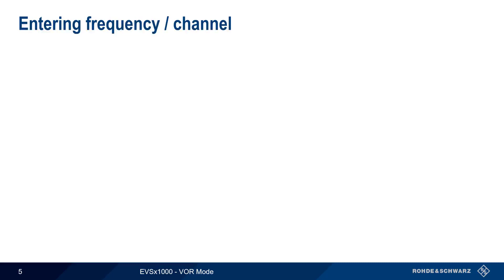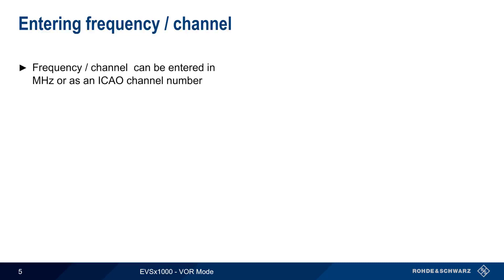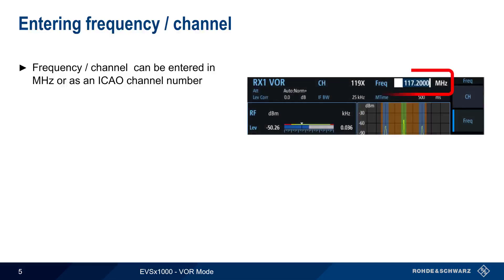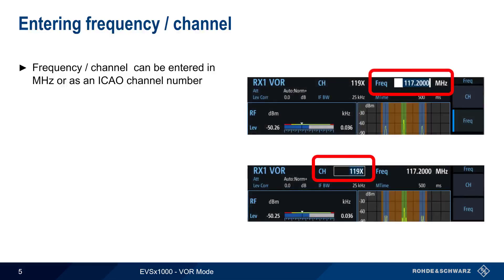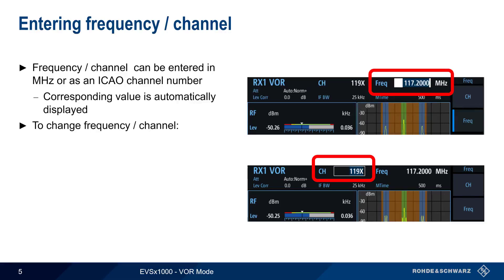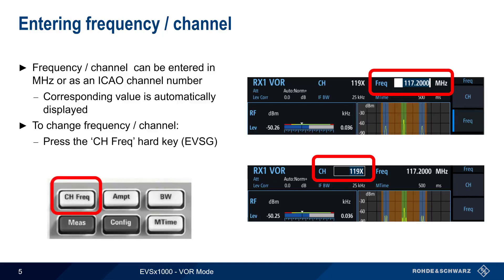The first step in VOR analysis is entering the frequency or channel of the VOR station. This can be done either as the absolute frequency in MHz or as an ICAO channel number. Note that the EVS will automatically calculate and display the corresponding value. To change the frequency or channel on the EVS, press the Channel/Frequency hard key. In VNC mode, use the keyboard shortcut Q to either enter the frequency or the channel.